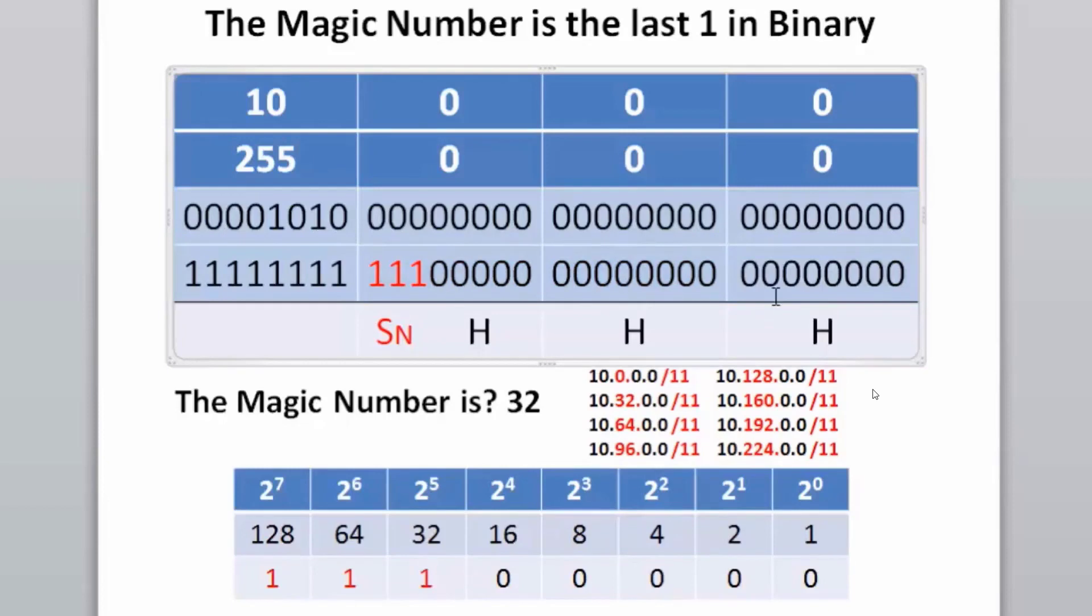For instance, if we take a look at this 10.192.0.0 subnet, the next subnet is 10.224, so that means that the host addresses go from 0.1 all the way up to 10.223.255.254 as the last usable host, and 255 is the broadcast. The next address is 10.224.0.0, which is the next subnet. All of these subnets are now slash 11.